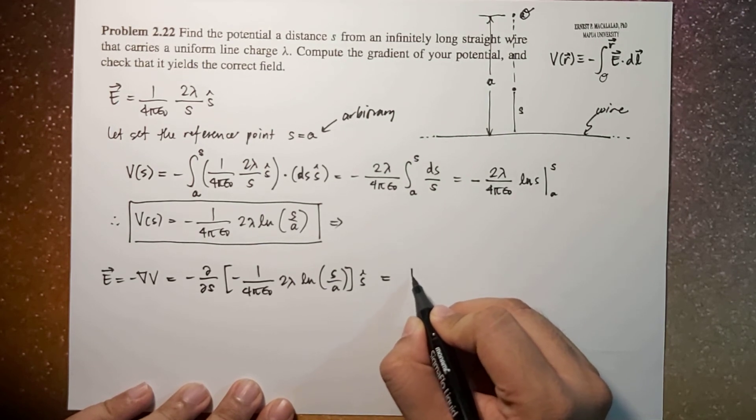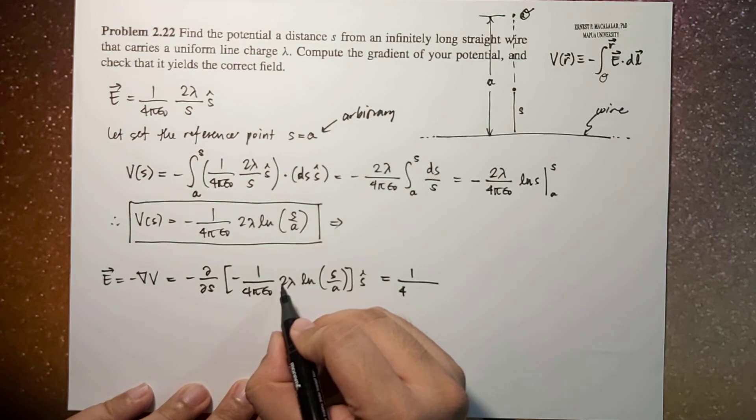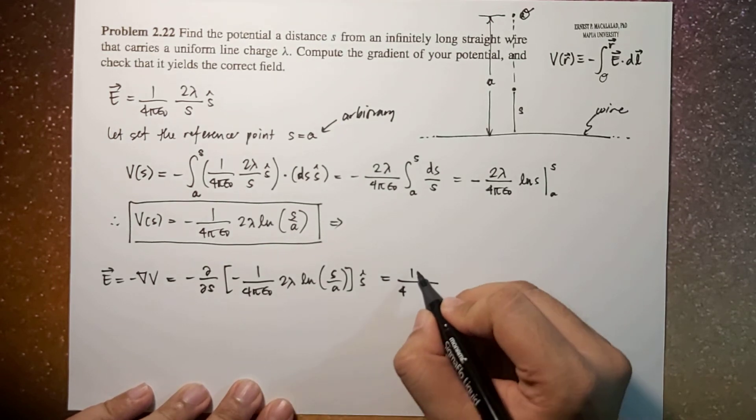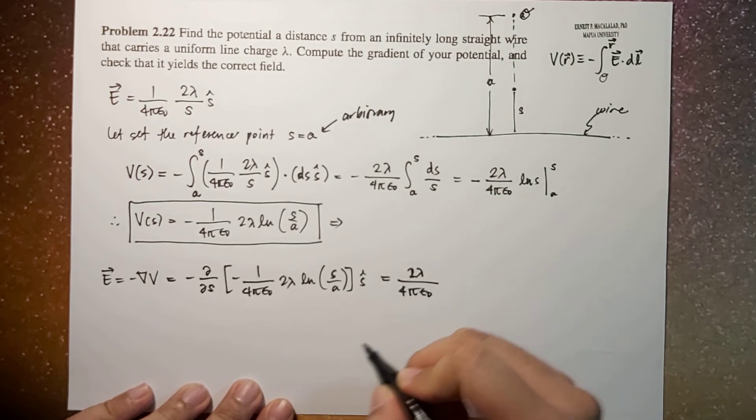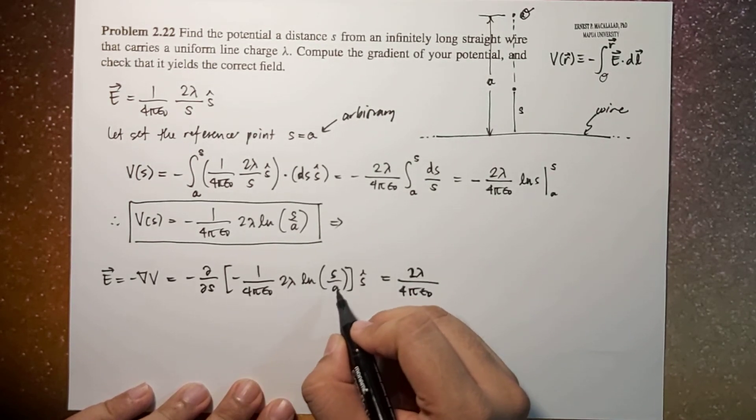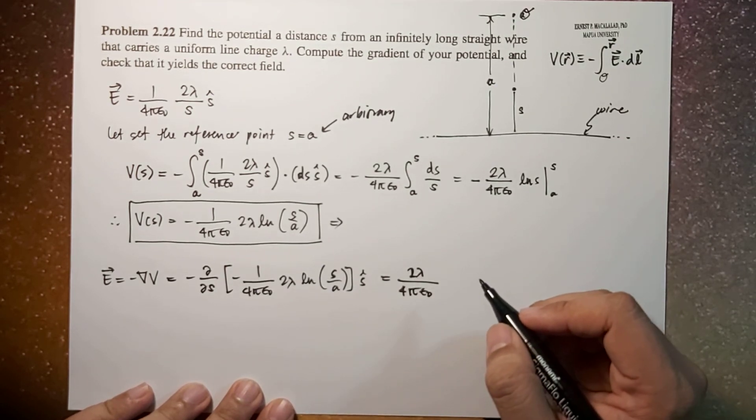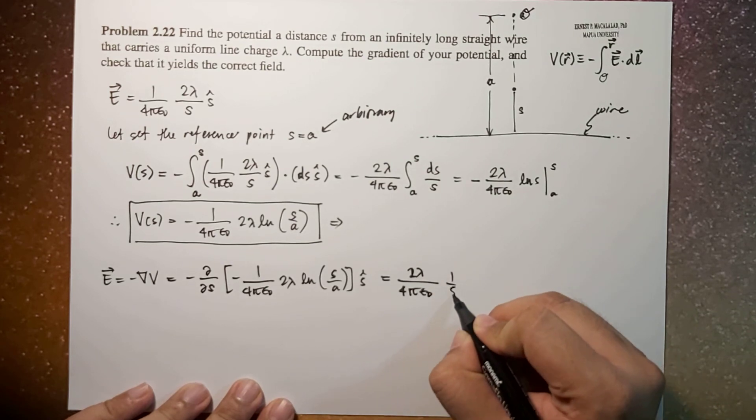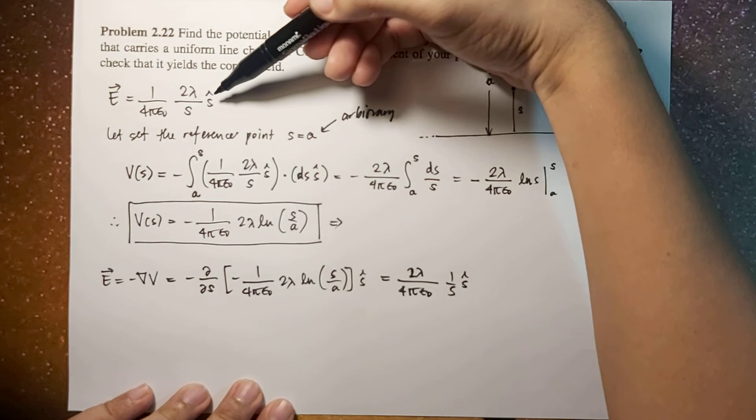So this will now be equal to negative negative, so that's positive. So that's 1 over, so that would be 2 lambda over 4 pi epsilon naught times the derivative of ln of s over a which is 1 over s, s hat, which is the same as this one right.